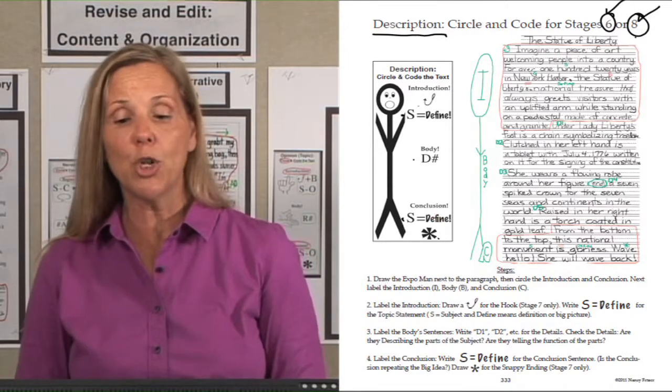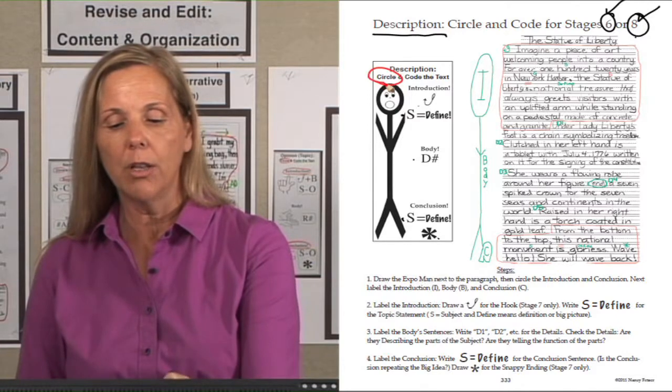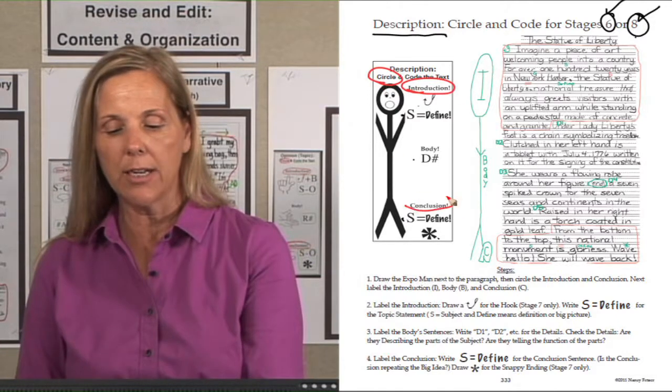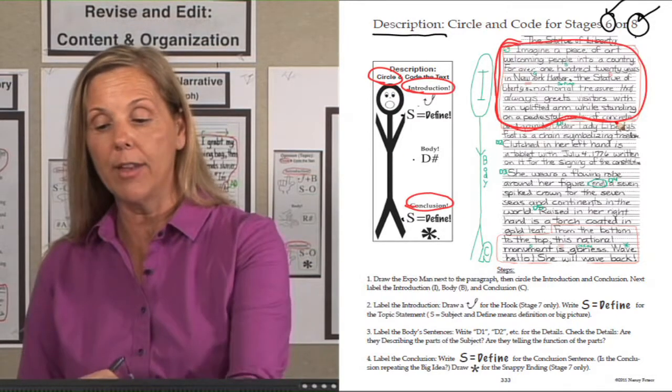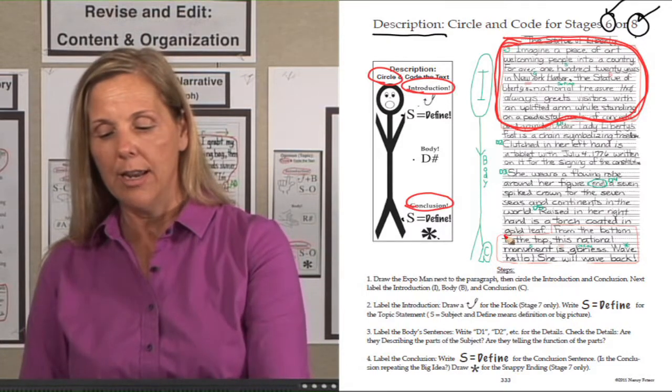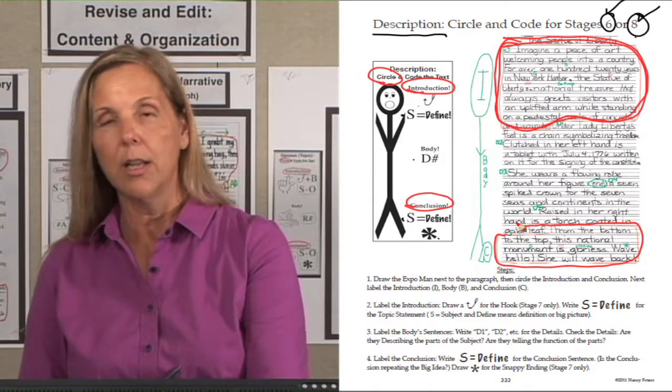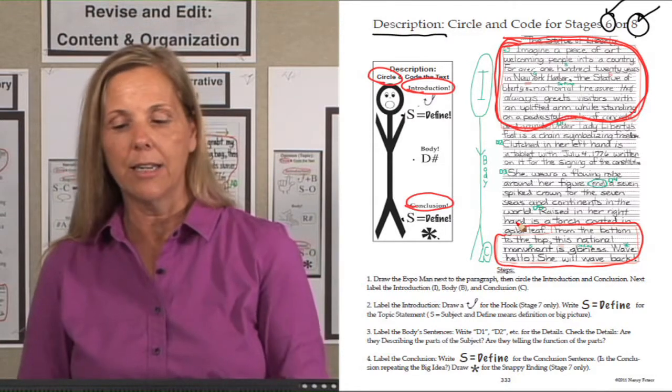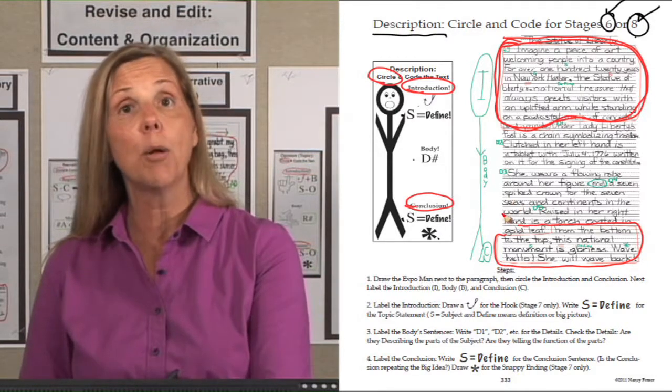On the description bookmark, they circle the introduction and conclusion. Found their hook and their big idea, and they circled it for their introduction. And then they circled the conclusion and snappy ending. Everything in the middle was the body.